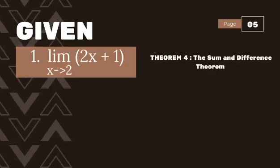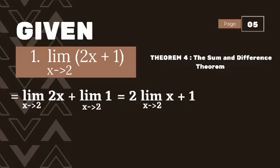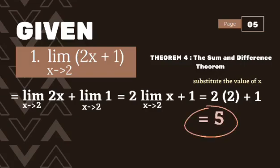First, separate 2x plus 1 into two parts. We will have the limit of 2x as x approaches 2, plus the limit of the constant 1 as x approaches 2. Then simplify: 2 times 2 plus 1 is equal to 5. Therefore, the limit of the function 2x plus 1 as x approaches 2 is 5.